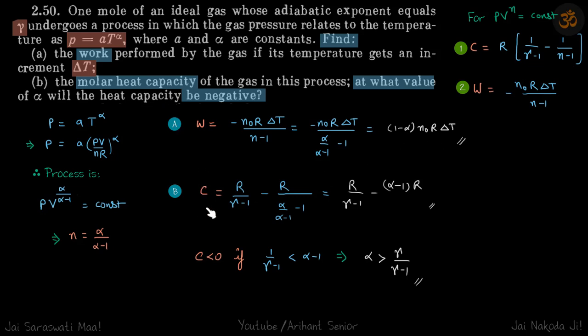Second, the molar heat capacity is given by this formula. We'll put the value of n and get our answer. For what value will the heat capacity be negative? If the heat capacity is negative, then 1/(γ-1) < α-1, or α > γ/(γ-1).